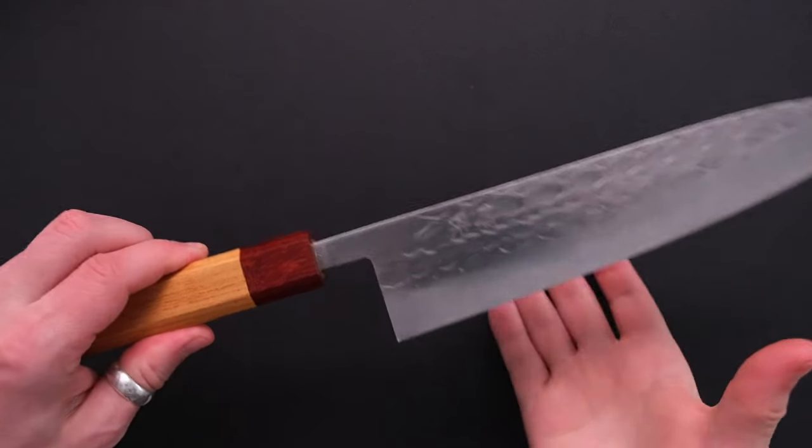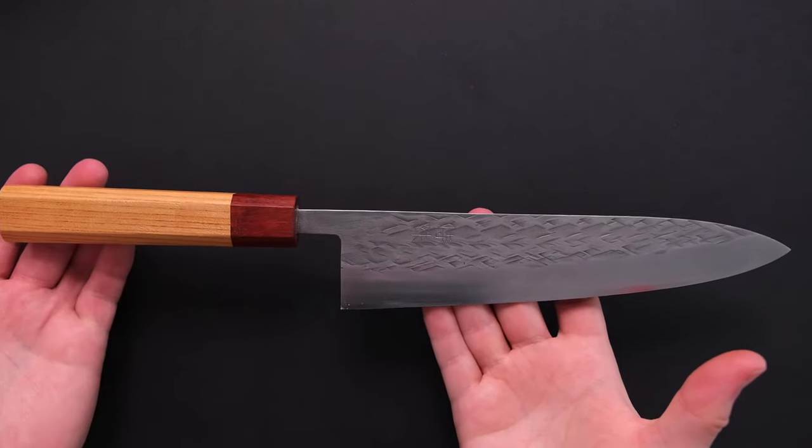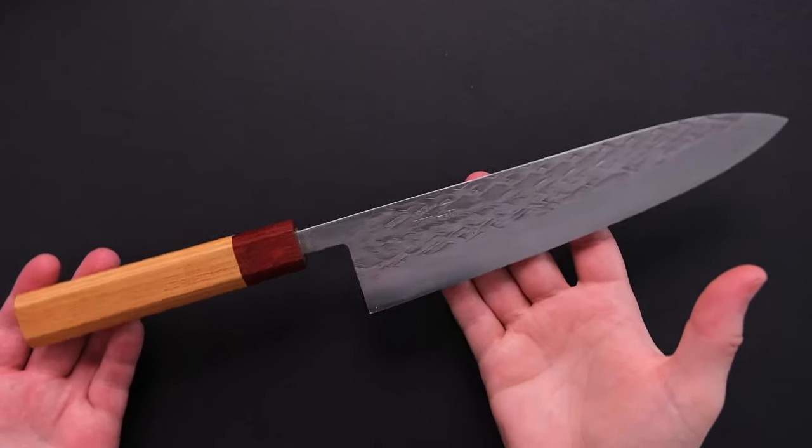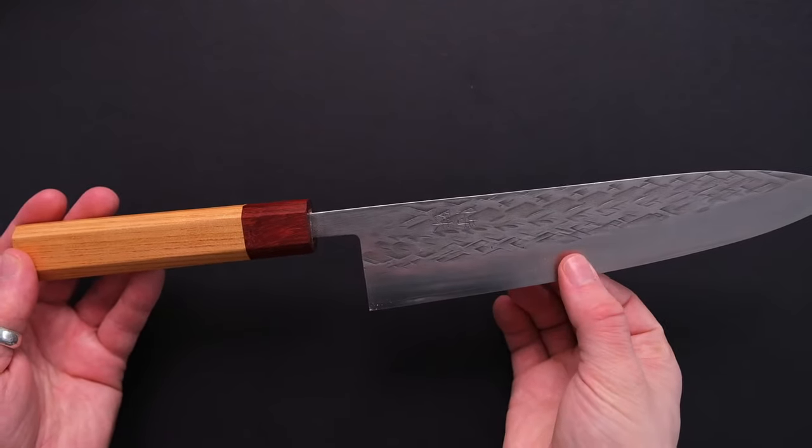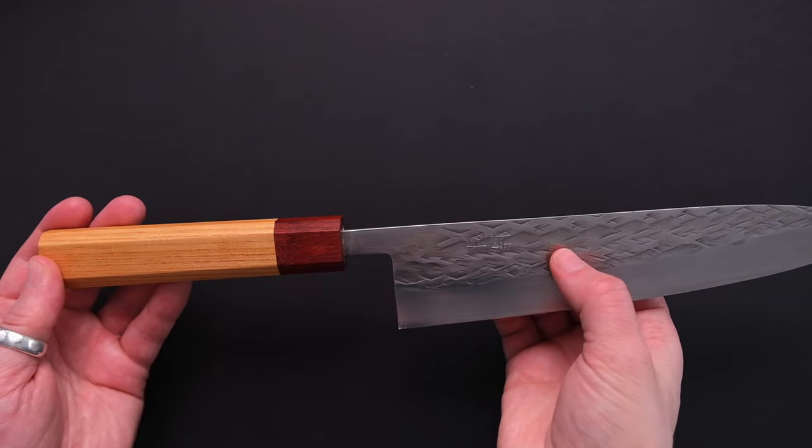What you have here in front of you is a double bevel 210mm Tokushu House Grand Giotto made by Tata Fusa. It has a SLD semi-stainless steel core and semi-stainless steel cladding.